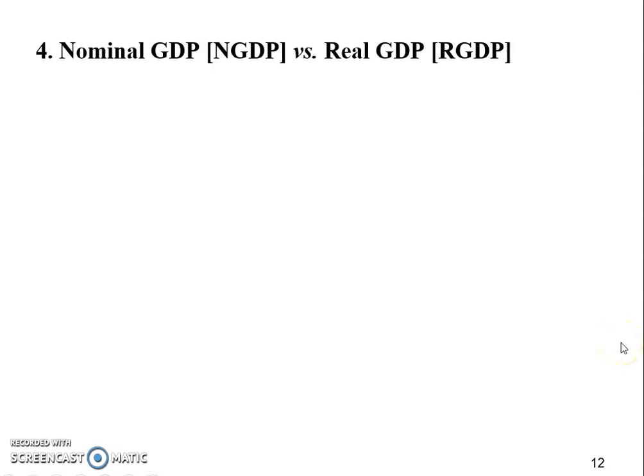After we have a discussion about the definition, measurement, and the components of output, now we are going to talk about the most important point of this chapter, which is the difference between nominal and real GDP. Before we start talking about what is nominal and what is real, we want to start with a hypothetical numerical example.